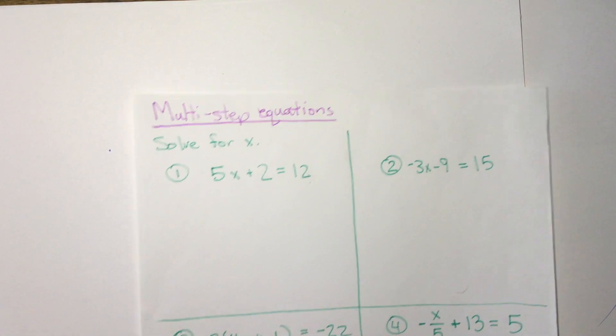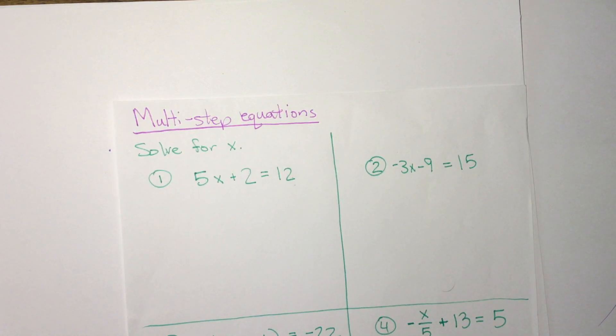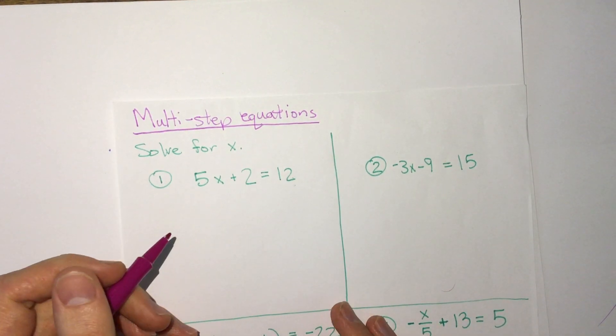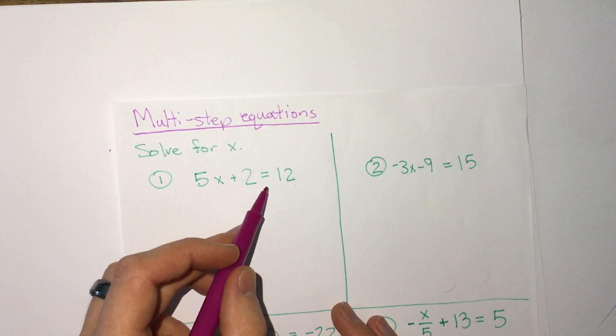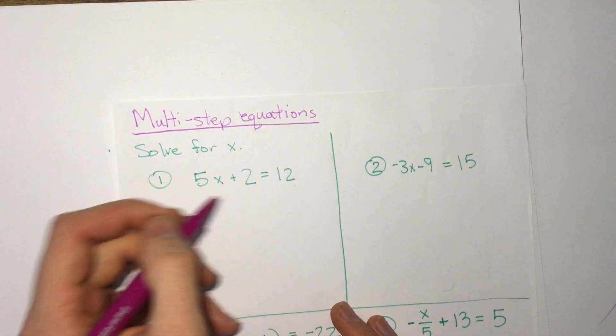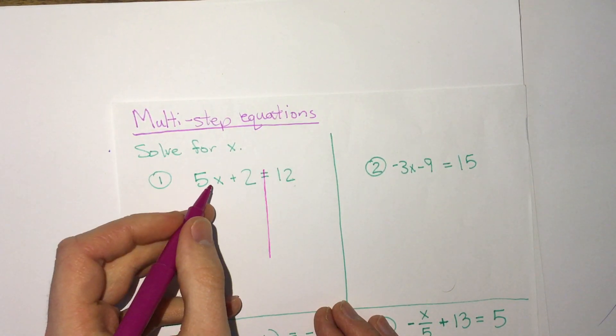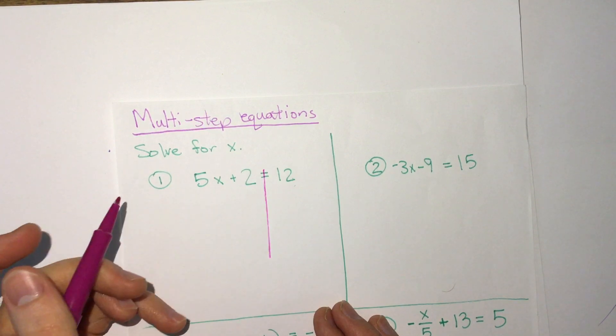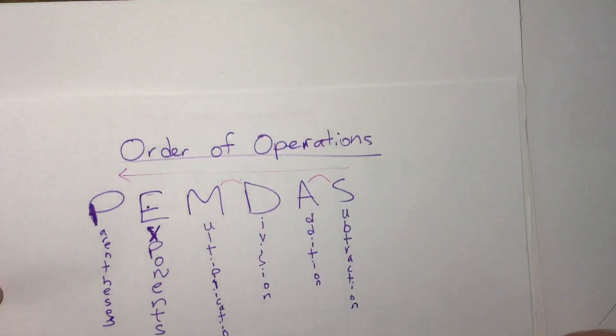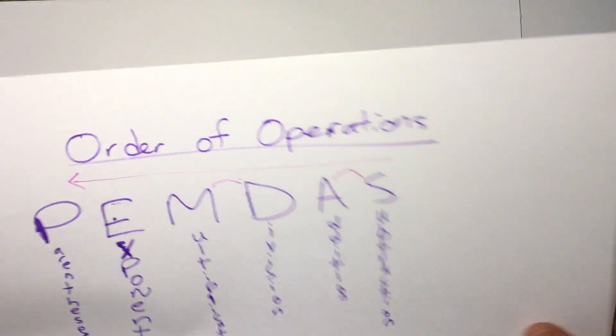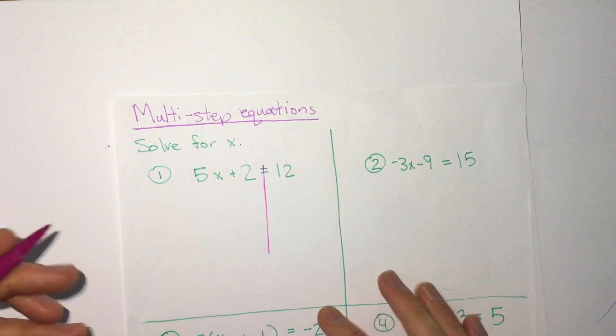So we have some different things going on, and we're just going to look at how do we solve for x when we have this type of equation. So we'll start with 5x plus 2 equals 12. Now we've looked at what happens if we have 5x, what happens if we have x plus 2, but not both at the same time. Well we want to remember we start by moving addition and subtraction, and we want to get x by itself. So what we're going to want to do is move this 2.